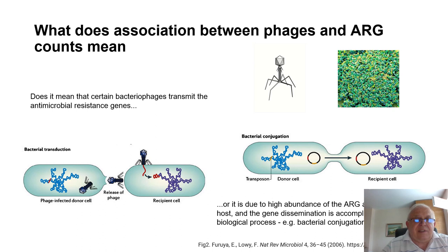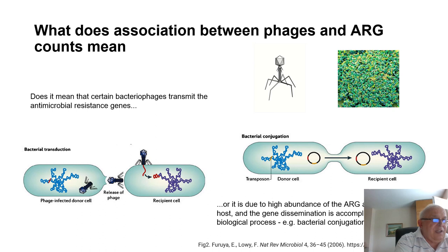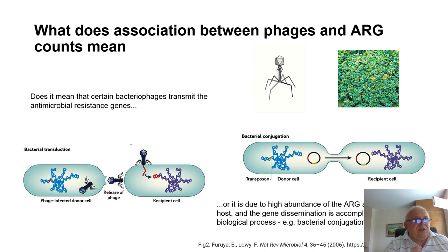The most interesting question is: what does the association between phages and their counts mean? The main problem is whether the bacterial phages transmit antimicrobial resistance genes or whether their abundance is more due to the host or due to another biological process like bacterial conjugation. We investigate the relationship between the phage, their host bacteria, and the AMR category, and we include both phage and host bacteria in the model.